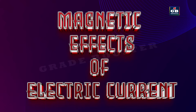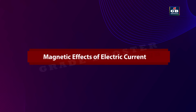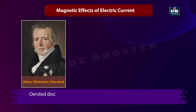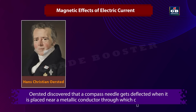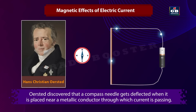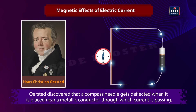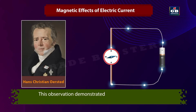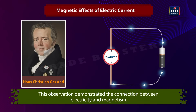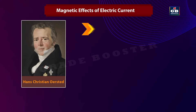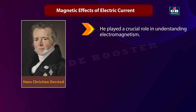Magnetic Effects of Electric Current. In 1820, Hans Christian Oersted, one of the leading scientists, accidentally discovered that a compass needle got deflected when an electric current passed through a metallic wire placed nearby. This observation demonstrated the connection between electricity and magnetism, and he played a crucial role in understanding electromagnetism.